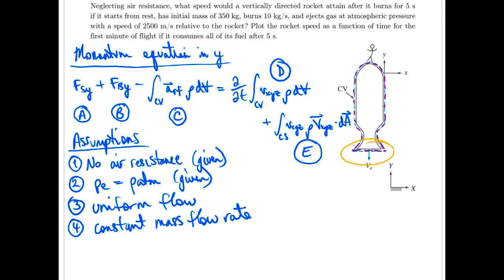So we assume it's uniform flow. It also says it burns at 10 kilograms per second. So we'll assume, again, a constant mass flow rate. Now, what do these mean for each of our terms? I'm going to walk through these one by one here.